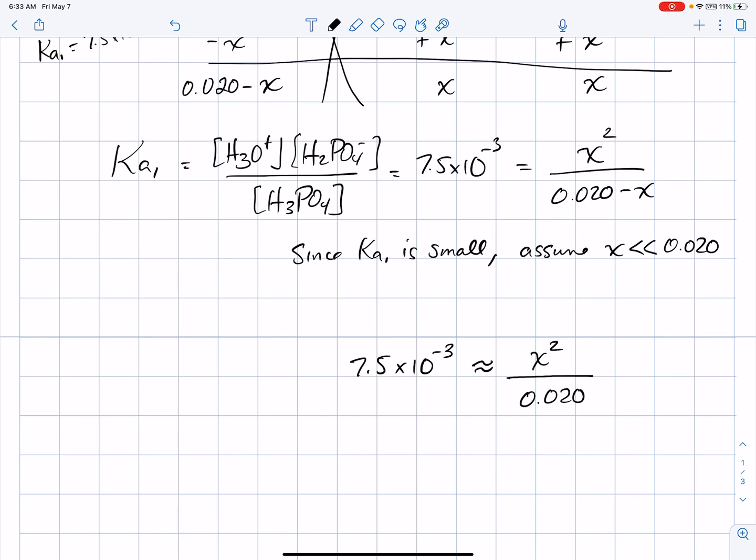This equation is very simple to solve. 7.5 times 10 to the minus 3 multiplied by 0.02 equals, and now this is equal to X squared. So, I'm going to square root this answer, and my first approximation for the answer is X is 0.012. I'm going to keep just two significant digits.